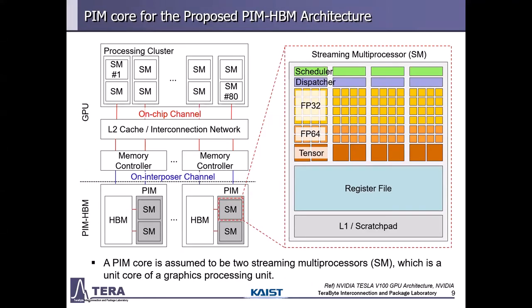Here is the diagram of the GPU and the proposed PIM-HBM. The GPU has 80 streaming multiprocessors (SMs). Each SM is interconnected to the L2 cache and memory controller through the on-chip channel, and then the memory controller accesses DRAM through the silicon interposer channel. In our architecture, the PIM core is assumed to be equivalent to two streaming multiprocessors. The SM has a control part including a scheduler and dispatcher, processing units for 32-bit floating point and 64-bit floating point tensors, and a private cache, so general-purpose computation is possible in the PIM core.